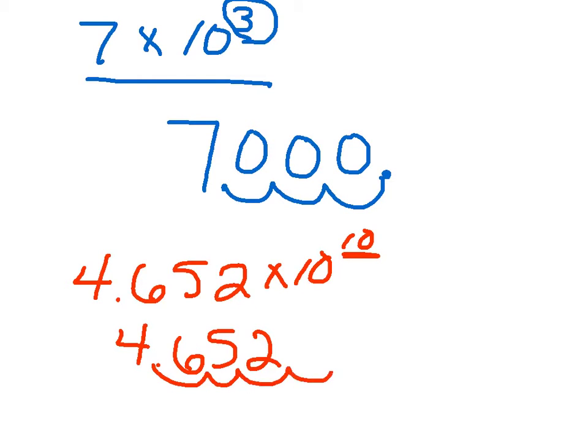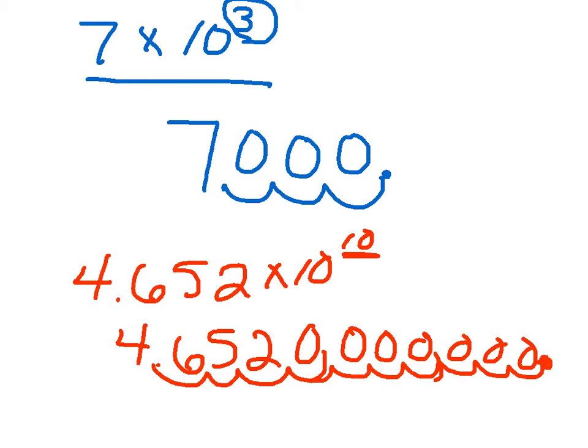1, 2, 3, 4, 5, 6, 7, 8, 9, 10. That's where my new decimal point is going to be. And I'm going to fill in the rest of these spaces with 0s. So that my new number now becomes 46,520,000,000.